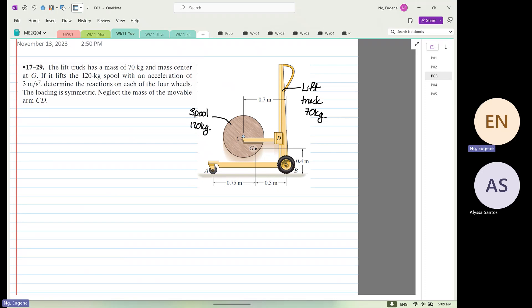And then it's going to lift, okay? And then it's going to leave. Means this thing is going up at an acceleration of three meters per second squared. Determine the reaction of each of the four wheels. And we are going to assume that the loading is symmetrical. Now, symmetrical means the front wheel and the rear wheels take the same load. Not necessarily the left and the right wheel take the same load. Neglect the mass of the movable arm CD.